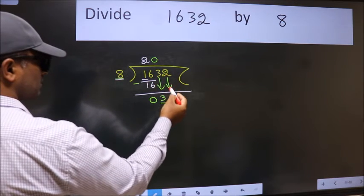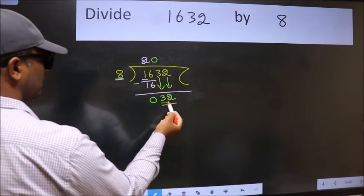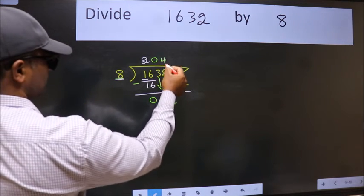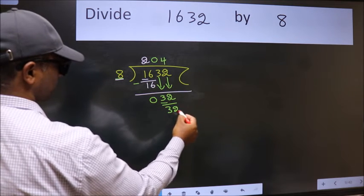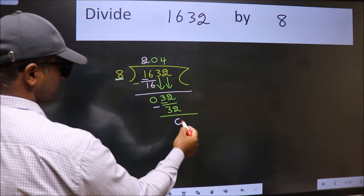So, 32. When do we get 32 in the 8 table? 8 times 4 is 32. Now we subtract. We get 0.